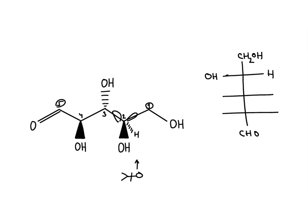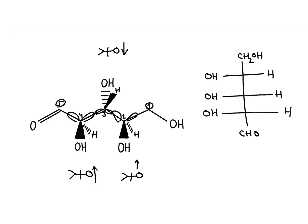Moving to the third carbon, let's draw the hydrogen. I have to stand here so that the solid lines are facing away from me. With the hydrogen going out of the page, I can see it's on the right side, while the OH group is on the left. And finally, I am going to stand here looking at it this way so that these solid lines are facing away from me. I will draw the hydrogen here, and I can see that this OH group is once again on my left, with the hydrogen going into the page on my right.